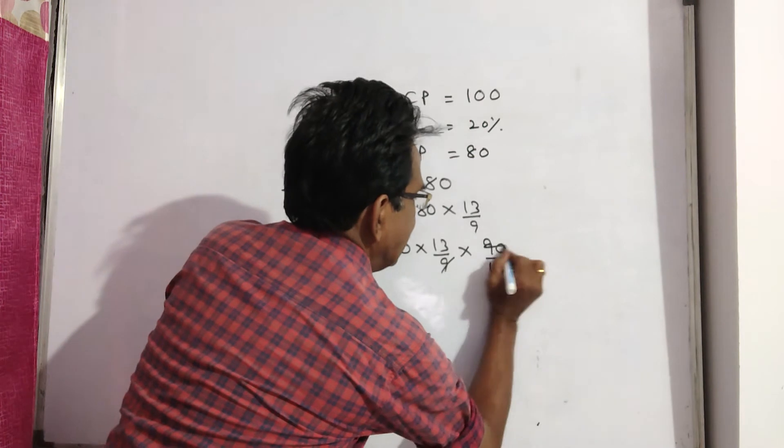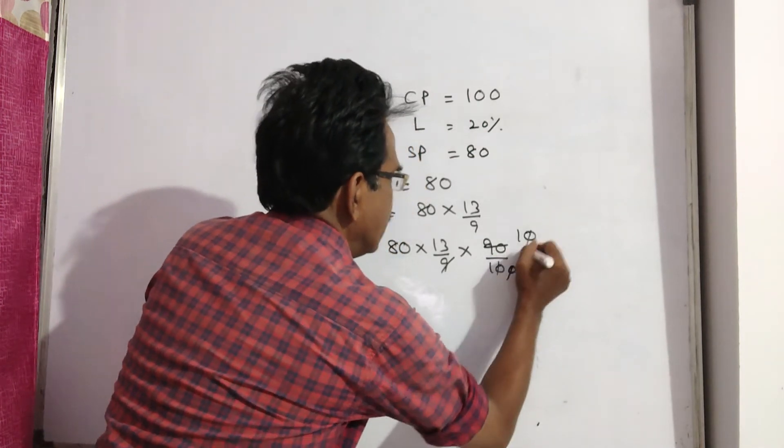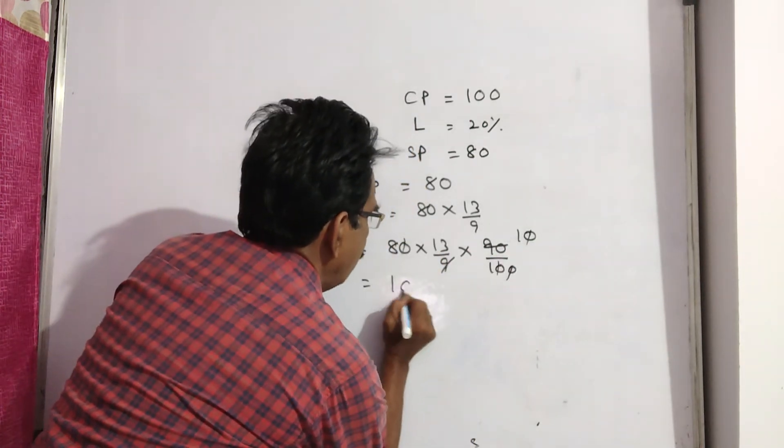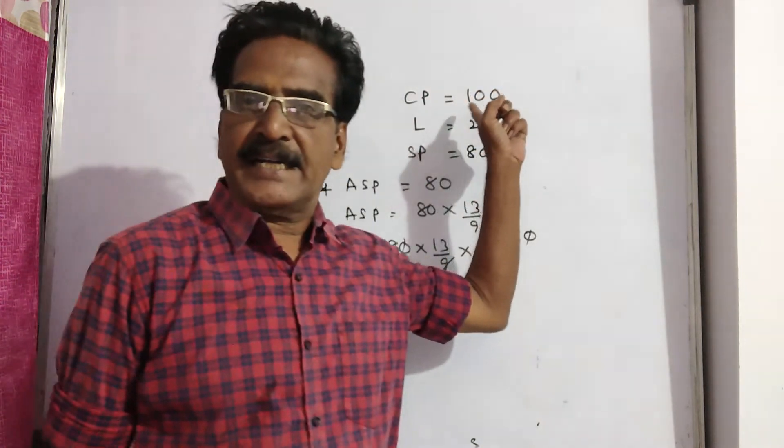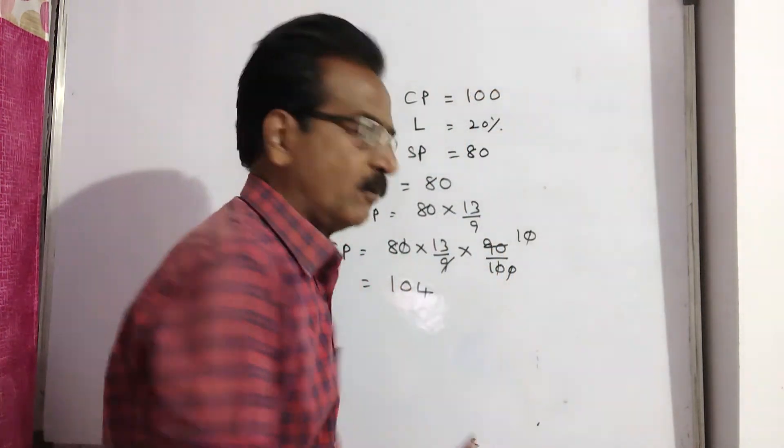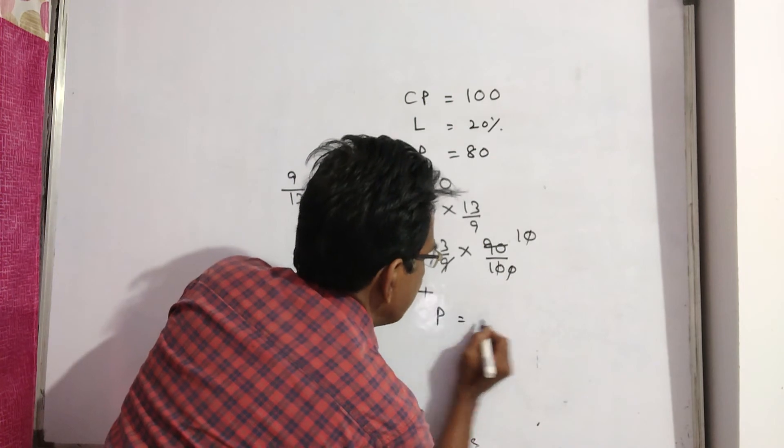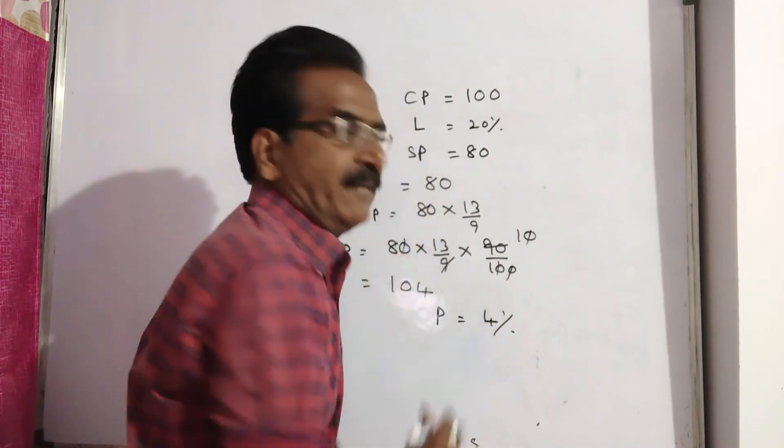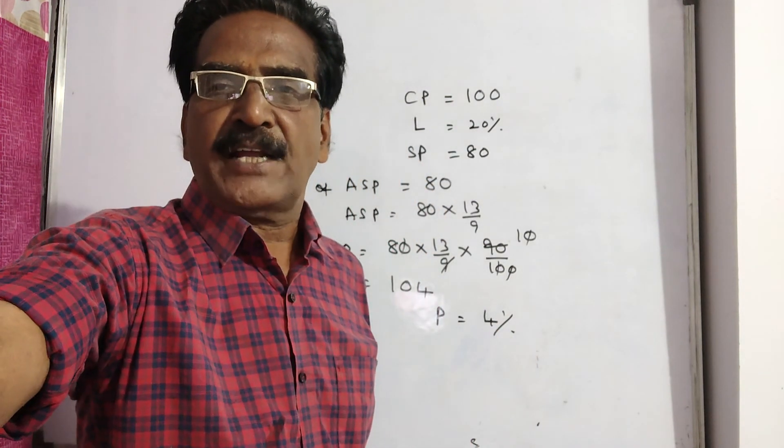So 9/10, two zeros get cancelled, 8 times 13 is 104. So cost price is 100, selling price is 104. So profit equals 4%. Okay friends, thank you.